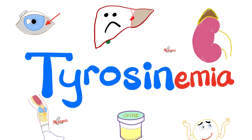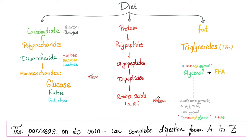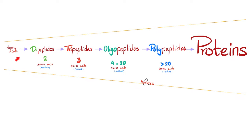Please watch the videos in this clinical biochemistry playlist in order. In previous videos, we said that the diet is carbs, proteins, or fat. Protein metabolism will give me amino acids — the big guys, the small guys. Amino acids are here.